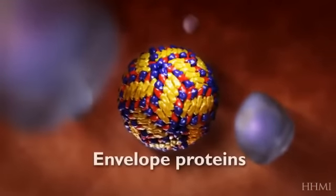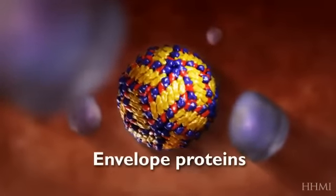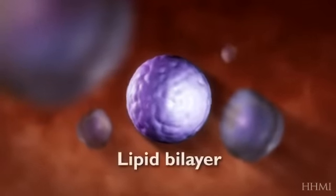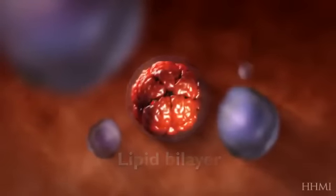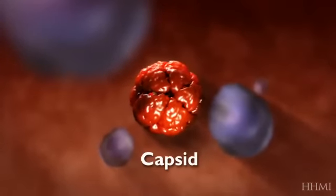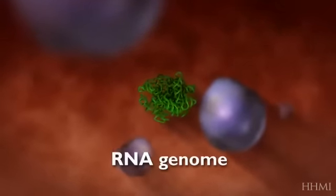Dengue virus is an RNA virus. Its outer surface is covered with envelope proteins surrounding a lipid bilayer envelope. Inside the envelope is a capsid shell that contains the virus's RNA genome.